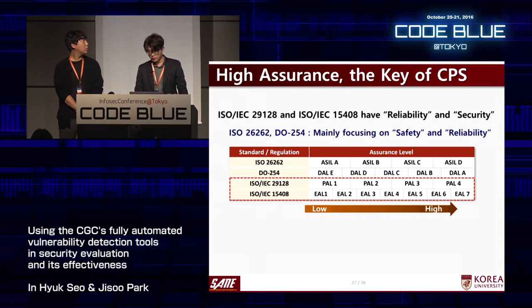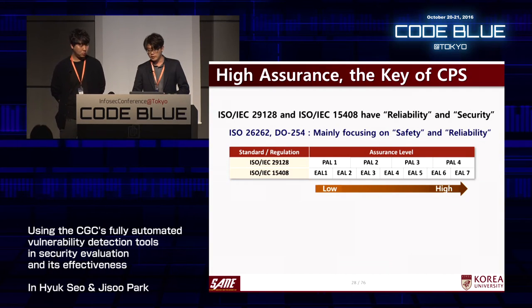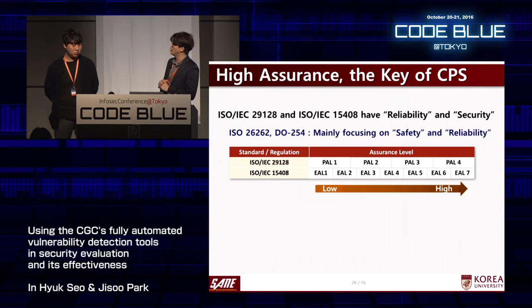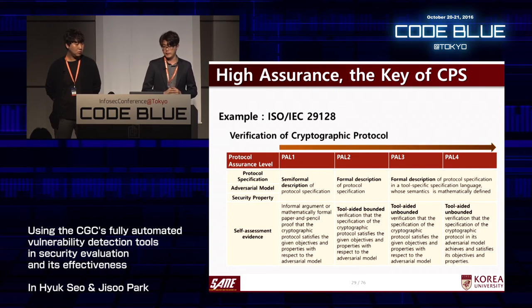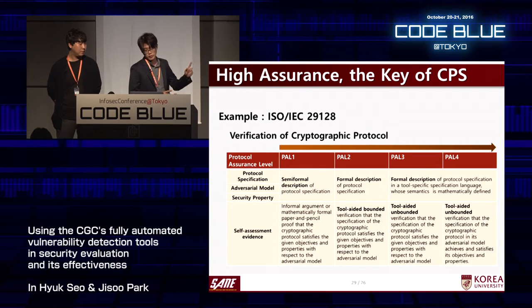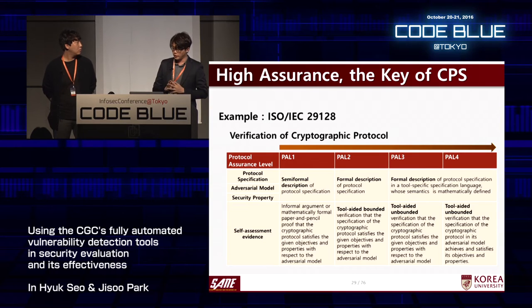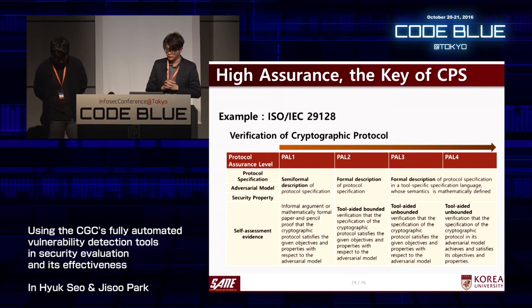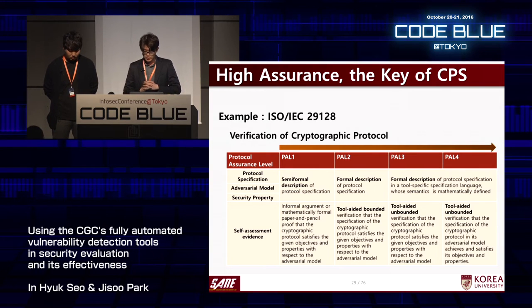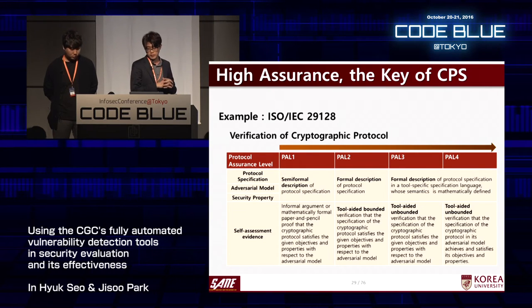This table shows assurance levels for each standard or regulation. For ISO/IEC 29128, there are four assurance levels. From PAL 2 onwards, it requires a formal description of protocol specification in a specification language whose semantics is mathematically defined. PAL 2, PAL 3, and PAL 4 also require tool-aided verification. For ISO 15408 — Common Criteria — the Evaluation Assurance Level (EAL) has seven levels, EAL1 to EAL7. After EAL4, that is EAL5, EAL6, and EAL7, semi-formal or formal verification of design and tests is required.